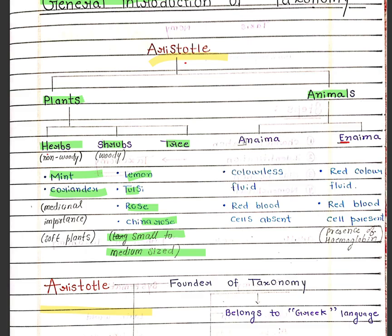Animals are divided into two parts: Anaima and Enaima. Anaima are colorless fluid animals — red blood cells are absent in Anaima. Enaima are red-colored fluid animals and red blood cells are present due to the presence of hemoglobin.